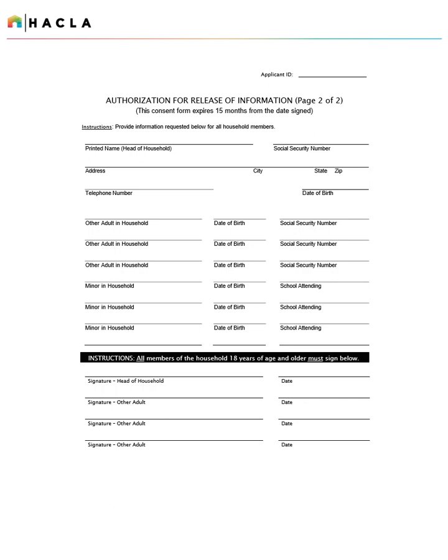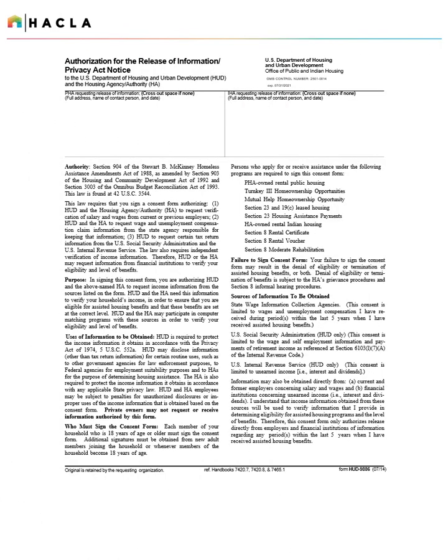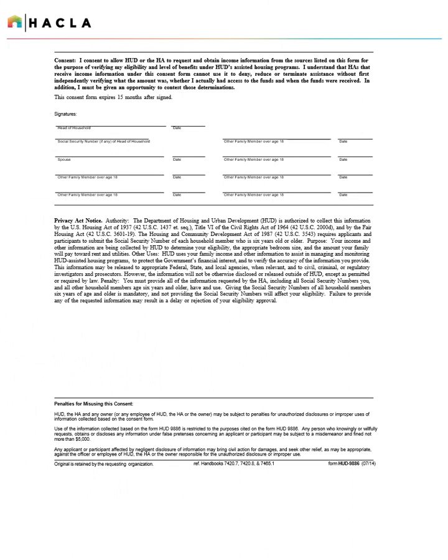All adult members should sign and date this page and all minors should be listed. In signing this consent form, you are authorizing HUD and the above-named Housing Authority to request income information from the sources listed on the form. HUD and the Housing Authority need this information to verify your household's income in order to ensure that you are eligible for assisted housing benefits and that these benefits are set at the correct level. HUD and the Housing Authority may participate in computer matching programs with these sources in order to verify your eligibility and level of benefits. Every adult household member over the age of 18 will need to sign and date this form.